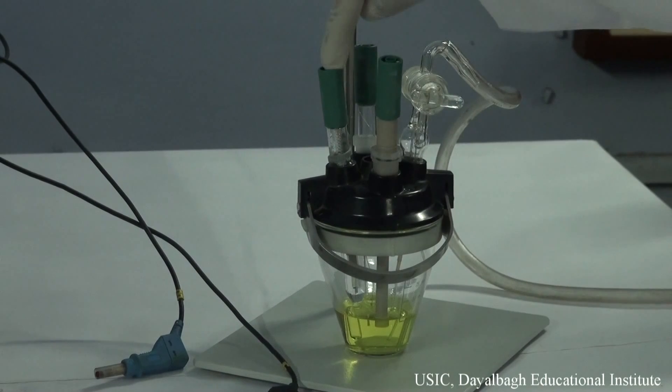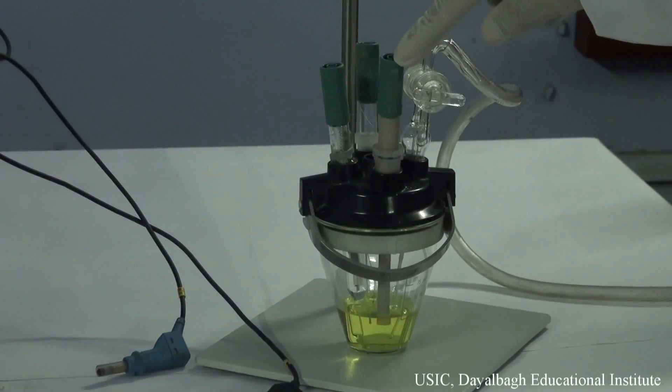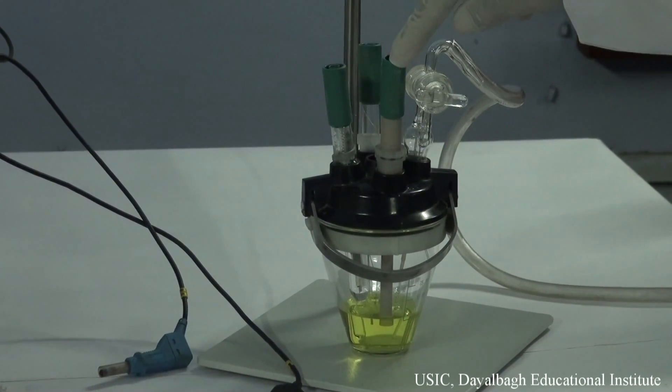Now this reference electrode, which is silver-silver chloride electrode, balances or provides the potential to the working electrode, while this counter electrode balances the current of the working electrode.